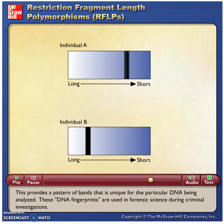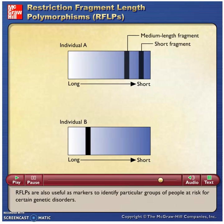These DNA fingerprints are used in forensic science during criminal investigations. RFLPs are also useful as markers to identify particular groups of people at risk for certain genetic disorders.